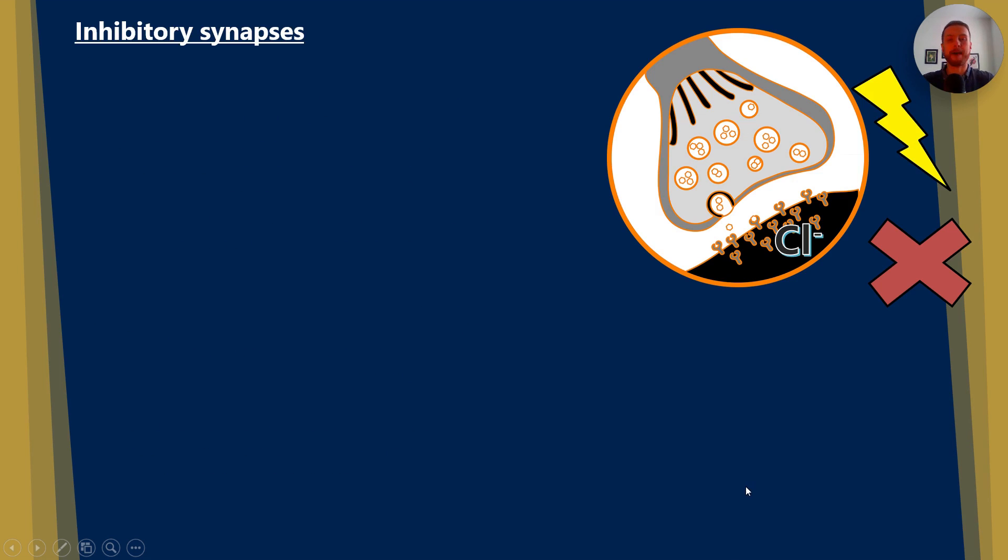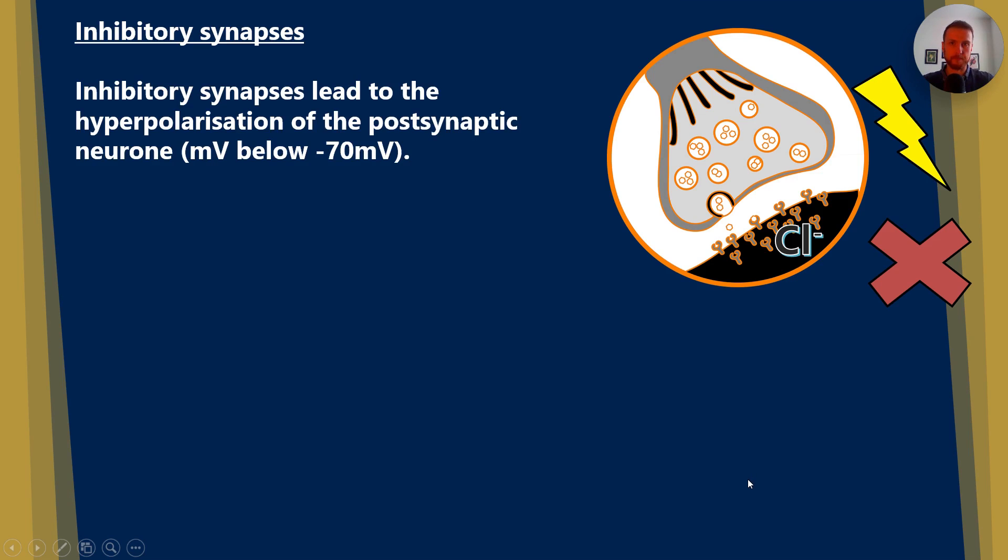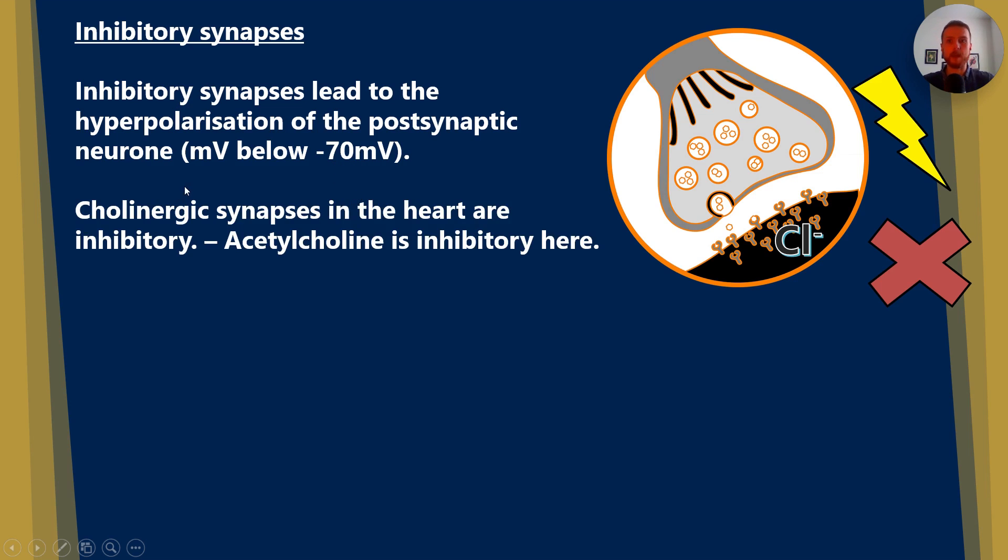Now we need to talk a little bit about inhibitory synapses now. They're not always excitatory. Sometimes they prevent nervous transmission. So inhibitory synapses lead to the hyperpolarization of the post-synaptic neuron. And by hyperpolarization, we mean where a millivoltage of below or more negative than minus 70 millivolts is achieved. Cholinergic synapses in the heart are a key example of this. Acetylcholine is a neurotransmitter that inhibits nervous impulses here.